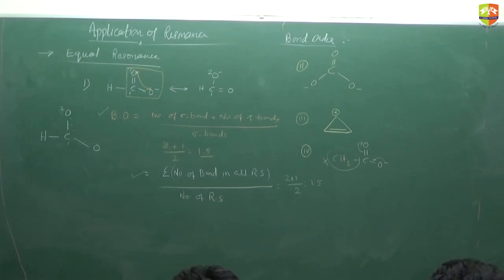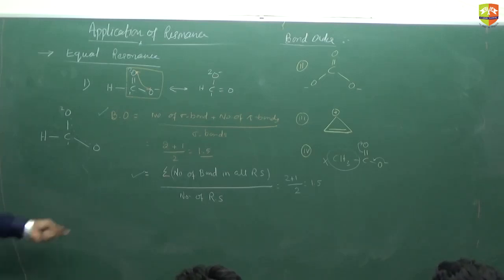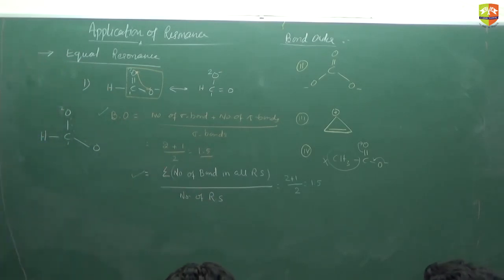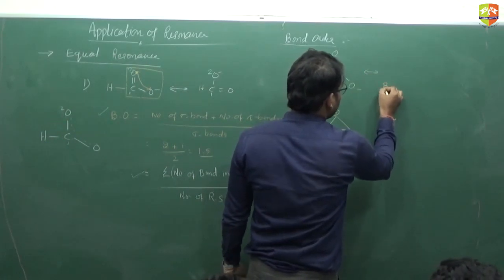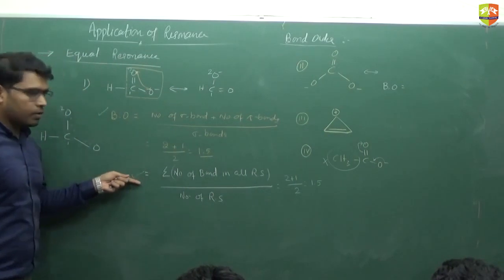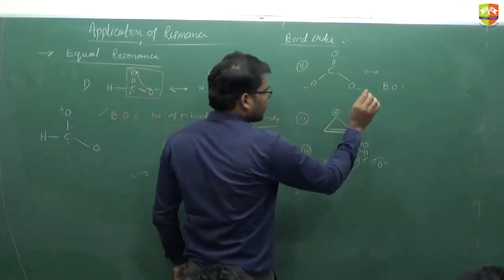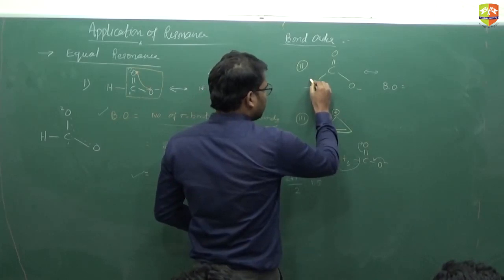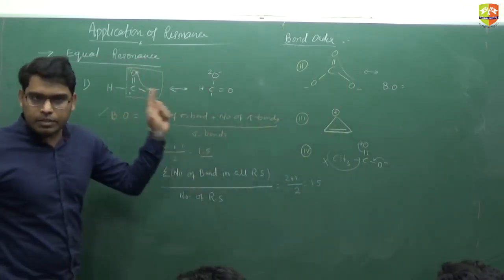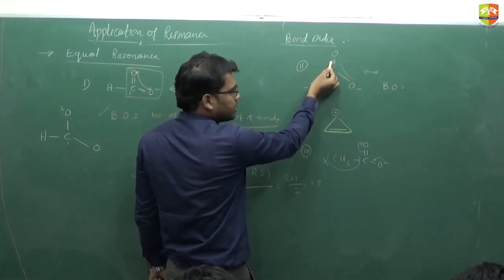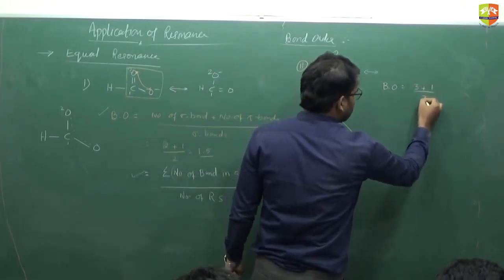In case of equal resonance, you find the average — which is exactly what the formula gives. Now for CO₃²⁻, the resonance is possible throughout the molecule. We have 3 sigma bonds and 1 pi bond. So using the first formula: 3 plus 1 divided by 3 equals 4/3. The carbon-oxygen bond order is 4/3.